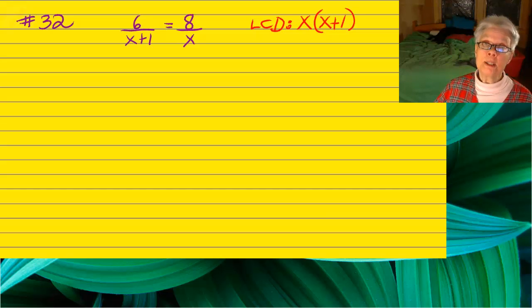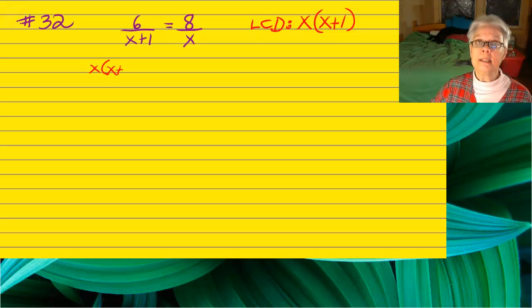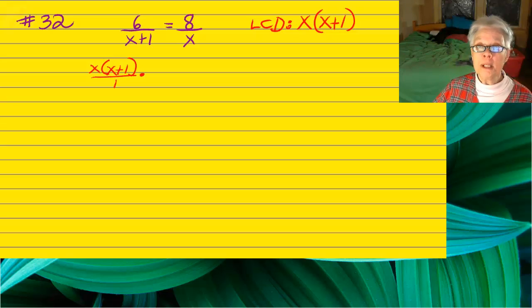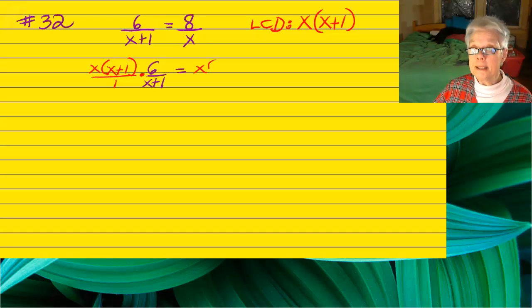The x in the x plus 1 cannot be used to cancel out an x by itself. That x is connected to the plus 1. So x times x plus 1 is our LCD. And we'll multiply the left side of the equation by it, and we'll multiply the right side of the equation by x times x plus 1 over 1.